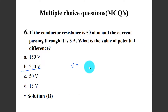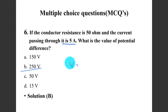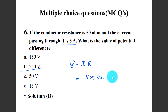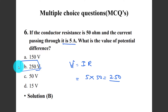Problem: If the conductor resistance is 50 ohms and the current passing through it is 5 amperes, what is the value of the potential difference? Using V equals I times R equals 5 times 50 equals 250 volts. So 250 volts is the correct answer.